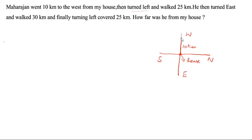Turned left means this way. You have to stand here — this side is the left side, this side is the right side. So turned left is 25 km in that direction. After that, he then turned east — east means this side.